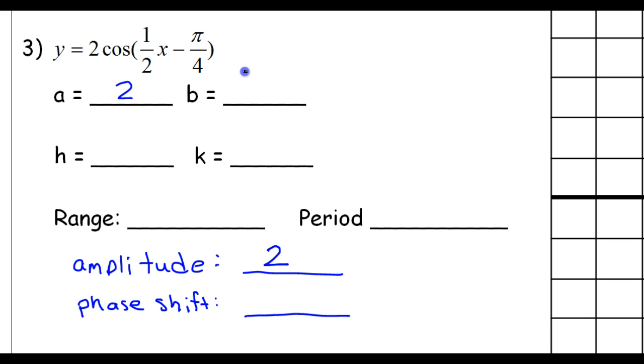Now, the B value is 1 half, but by itself, that doesn't tell me much of anything. I use the B value to help me find the period and the phase shift.